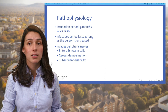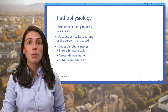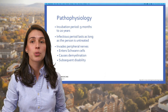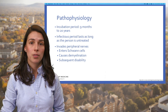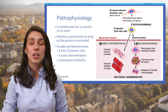The incubation period — the time between becoming infected and developing symptoms — ranges from nine months to 20 years. The infectious period, the time during which an infected person can infect others, will last for as long as the person has untreated disease. However, the person is no longer infectious soon after starting treatment with a combination of two or three medicines called multi-drug therapy. We will talk about this later.